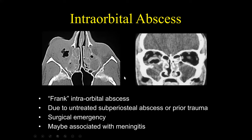This was a case of intraorbital abscess with bilateral mucosal thickening of the maxillary sinuses. I noticed air involving the retrobulbar area, and when I examined all the findings, there was a fracture involving the floor of the orbit. This ended up being an intraorbital abscess that extended from an acutely involved maxillary sinus — a frank intraorbital abscess extending from acute maxillary sinusitis.